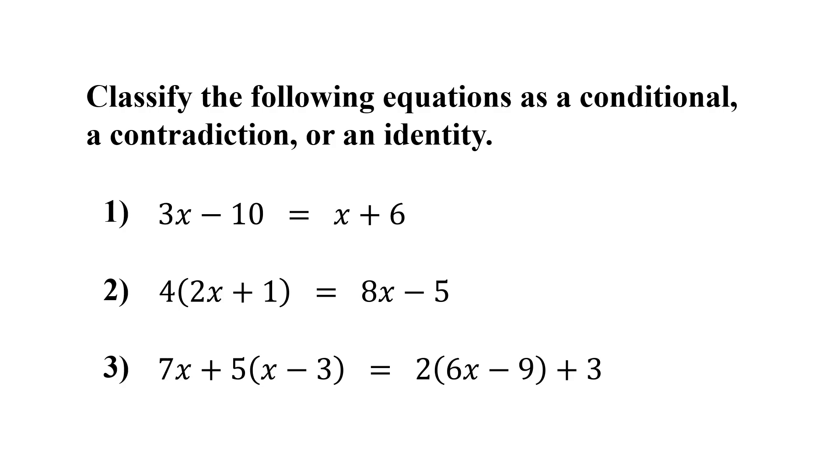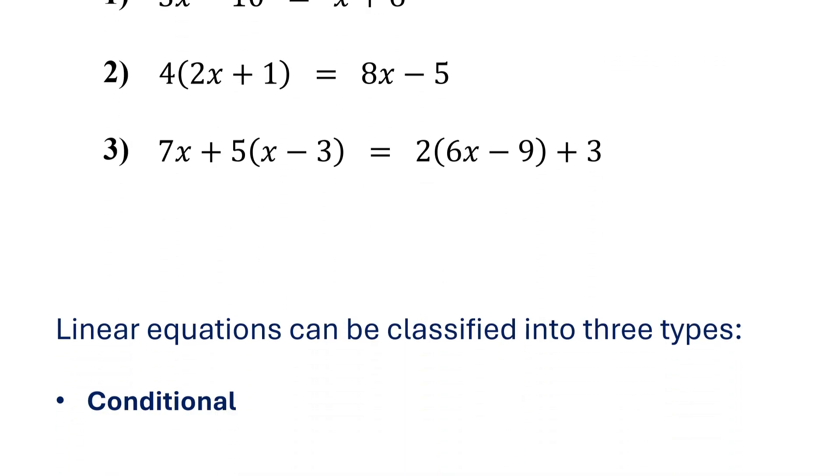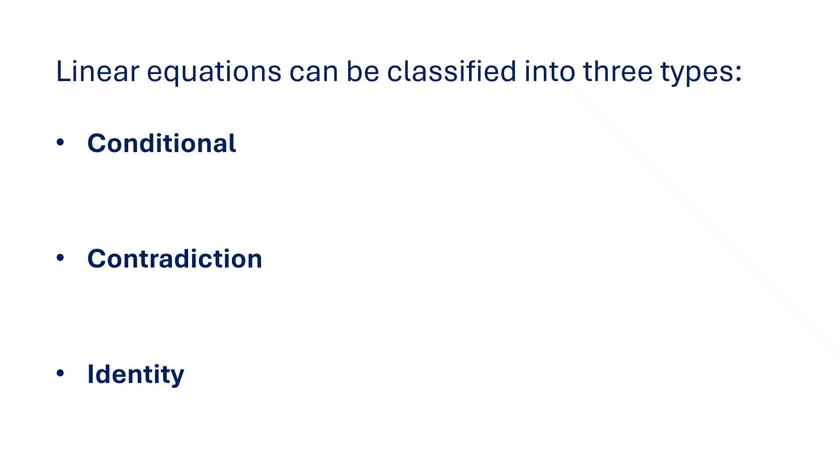In this lesson, you will learn how to tell whether a linear equation is conditional, a contradiction, or an identity. First, we'll break down what each one means, and then we'll see them in action with examples.